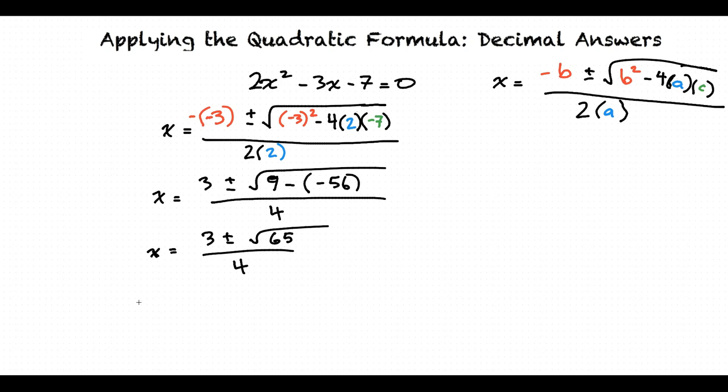Therefore, our answers are x = (3 + √65) / 4 and x = (3 - √65) / 4.